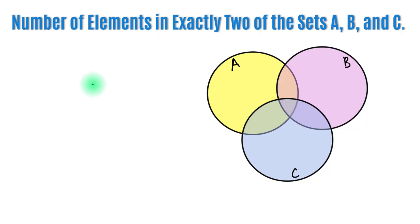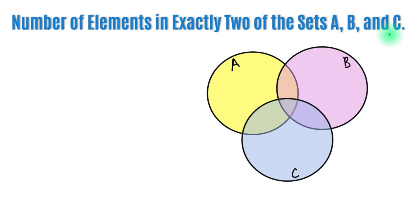Hello students, welcome to this video. Here we will derive the formula to find the number of elements in exactly two of the sets A, B, and C, where A, B, and C are non-empty finite sets.